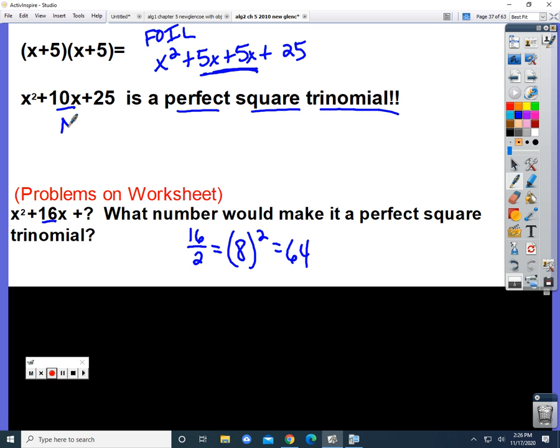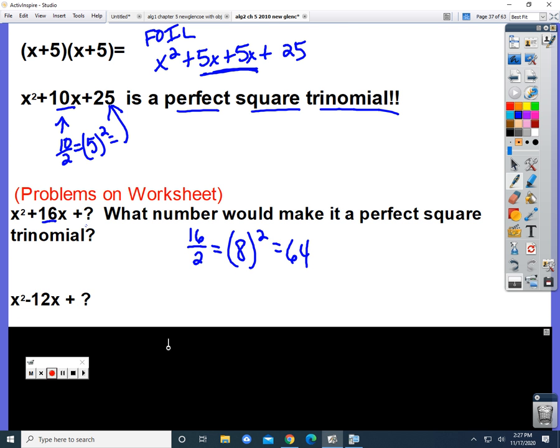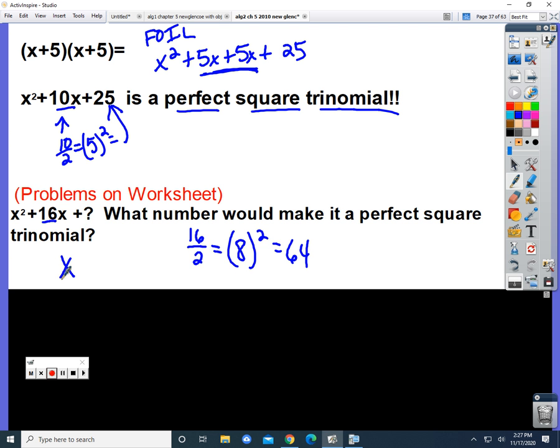Let me show you how that pattern works. Look back up here at this problem. Take 10 and divide it by 2. It equals 5. If you square it, you get 25. And so that's how this pattern works. So this answer would be x squared plus 16x plus 64. Always show your work on these problems. It will help you later whenever we go through the whole completing the square problem for solving.